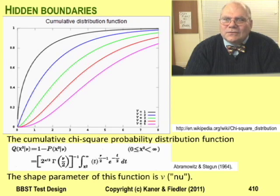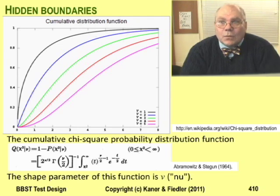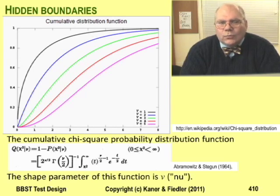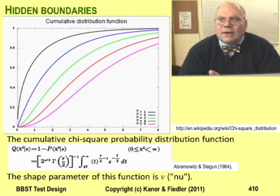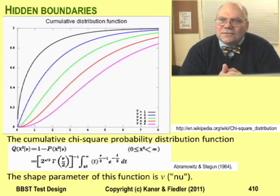One of the early pioneers of software testing, Boris Beiser, often pointed out that testers who don't look at the code have no idea what the real partitions and boundaries of a program are. Here's an example of that problem. The chi-square probability distribution function is widely used in statistics. The function has different shapes, determined by the value of a shape parameter, which I label with the Greek letter nu. The graph shows different shapes for different values of nu. For most values of nu, it's impossible to calculate the exact value of chi-square — instead, you have to approximate it.